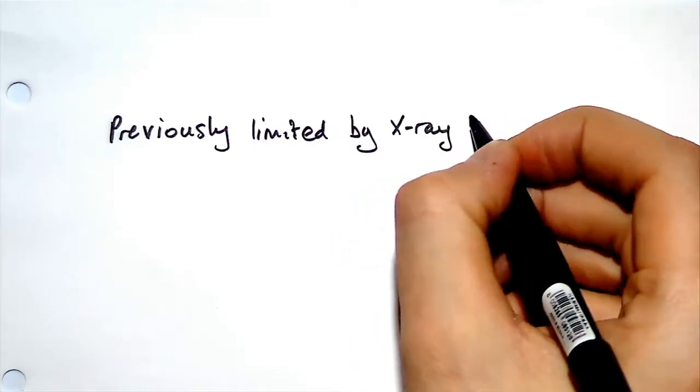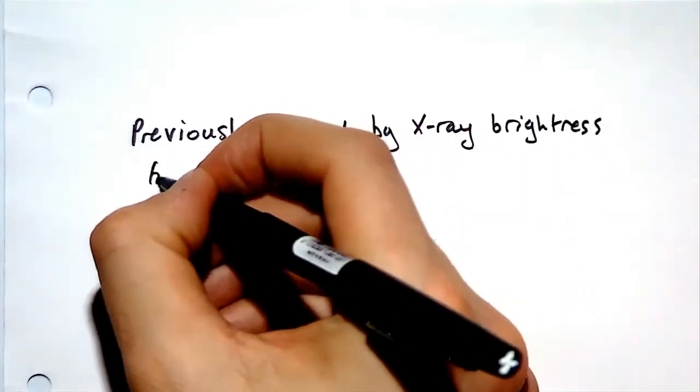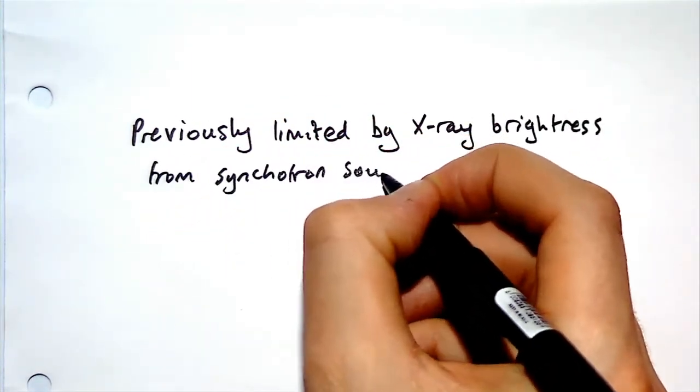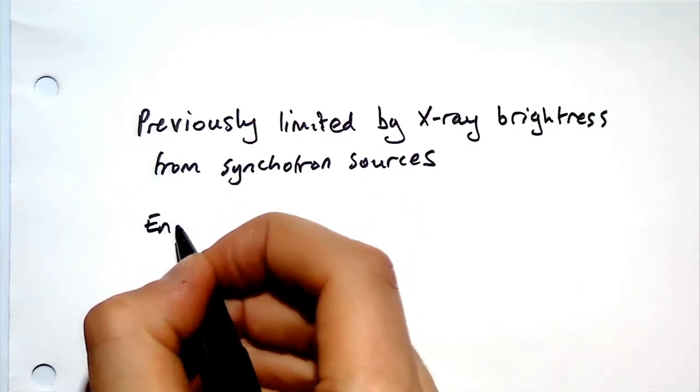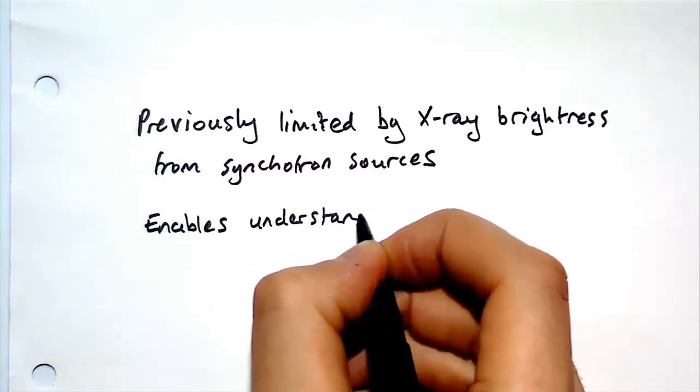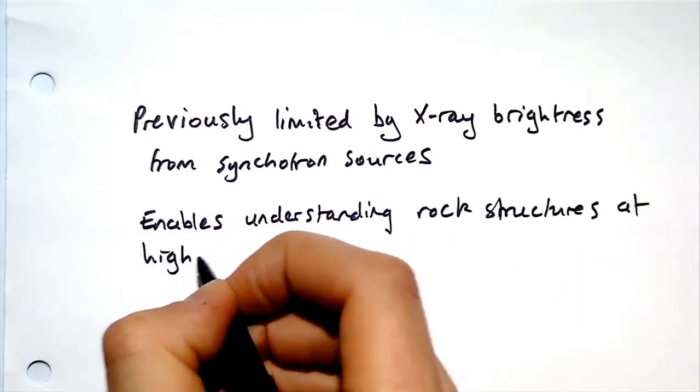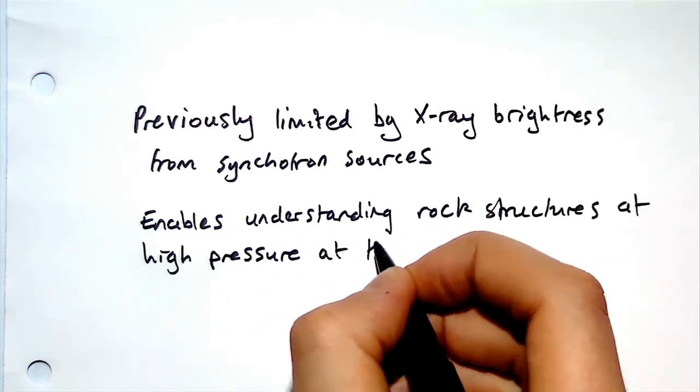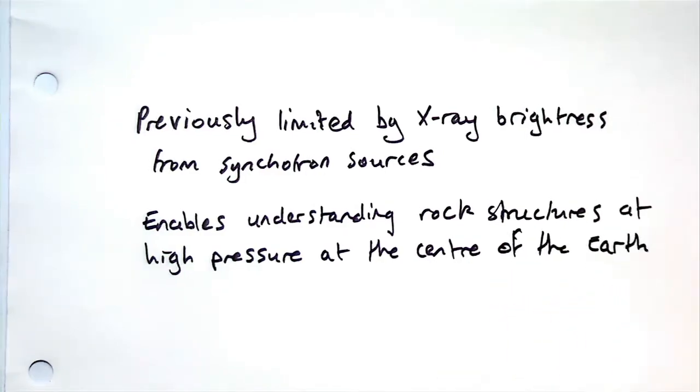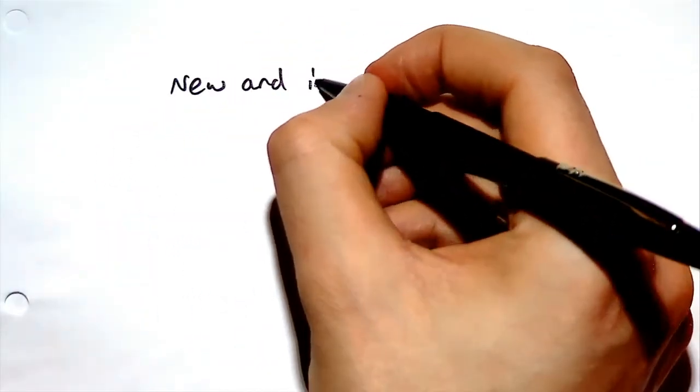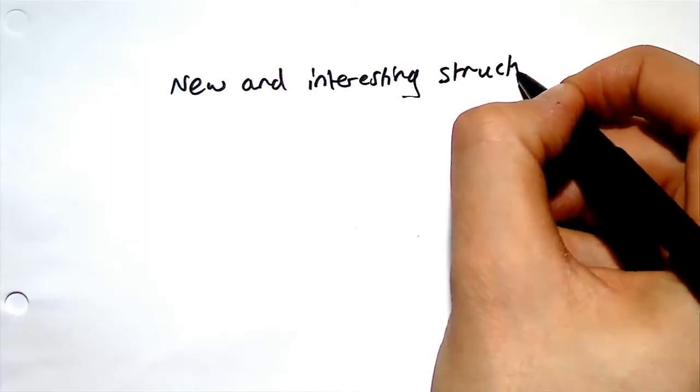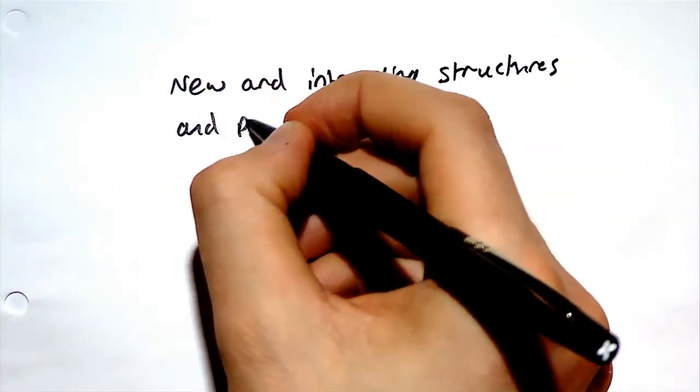Using the free electron laser allows us to determine the structure of rocks at very high pressures, for example at the centre of the earth. This is important for geology, where it enables us to learn the sound velocity. It can also be used to test the theoretical predictions of the phases of materials at very high pressures, and potentially lead to new and cool structures that we haven't seen before. This concludes the section on dynamic compression.